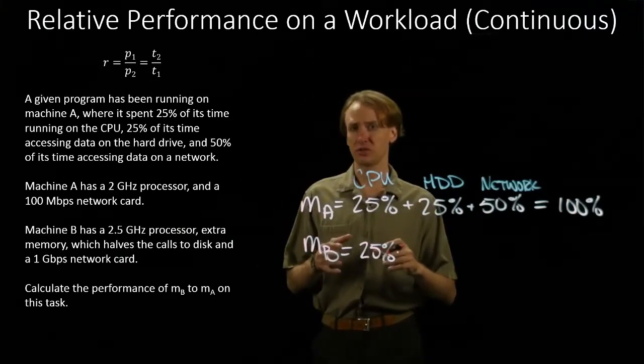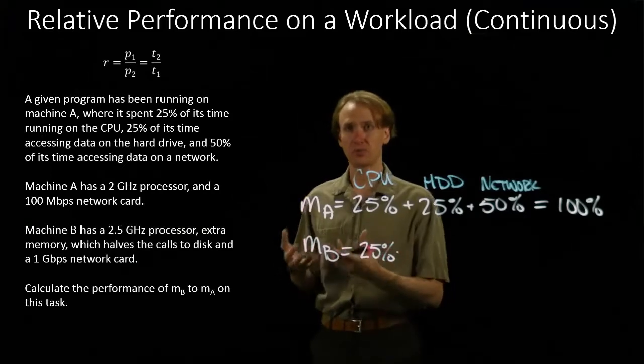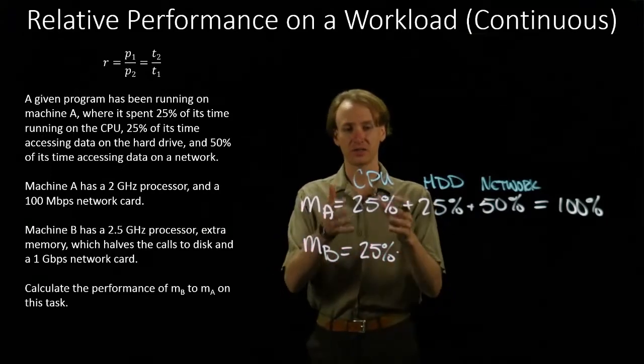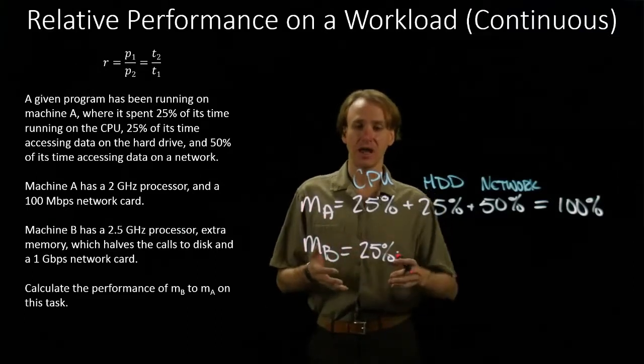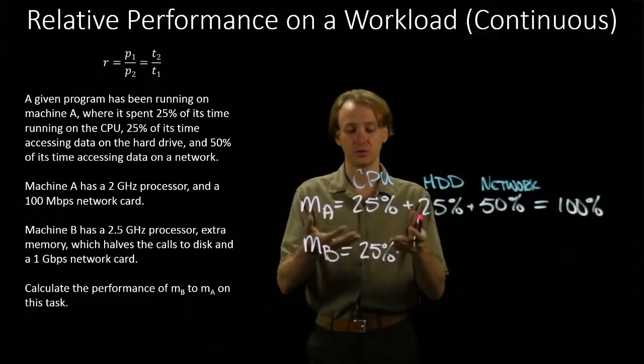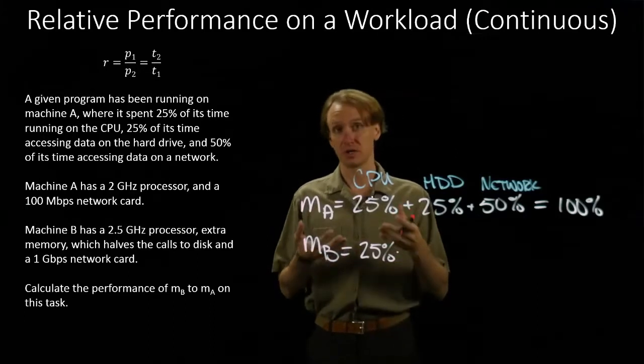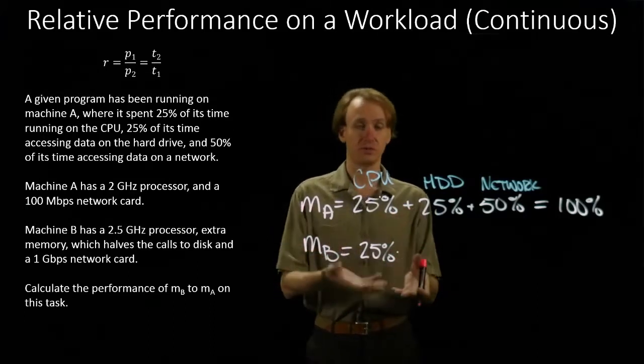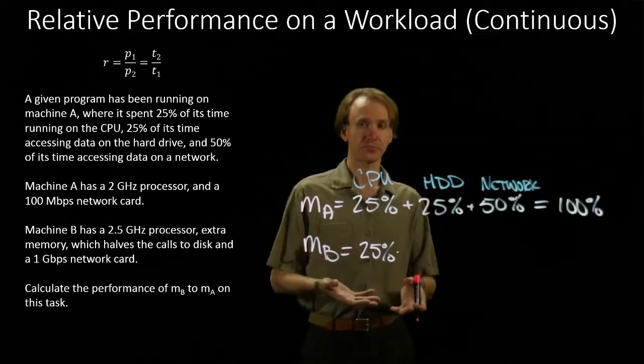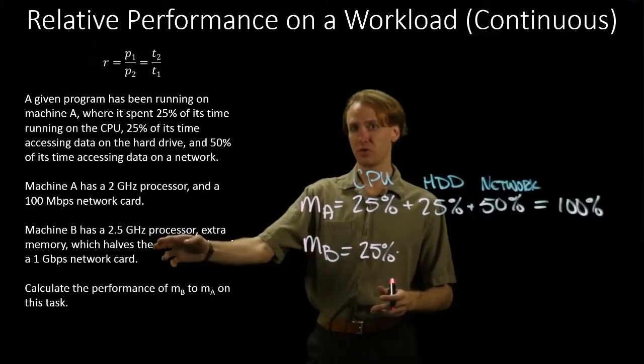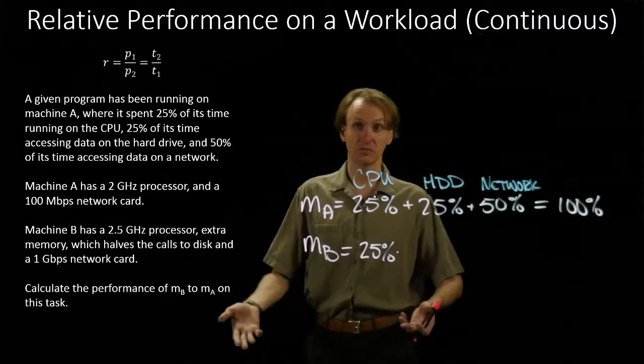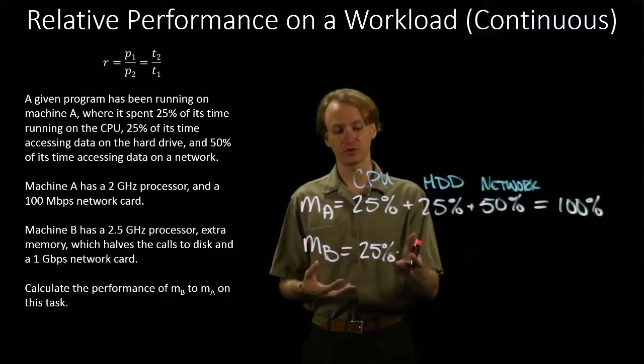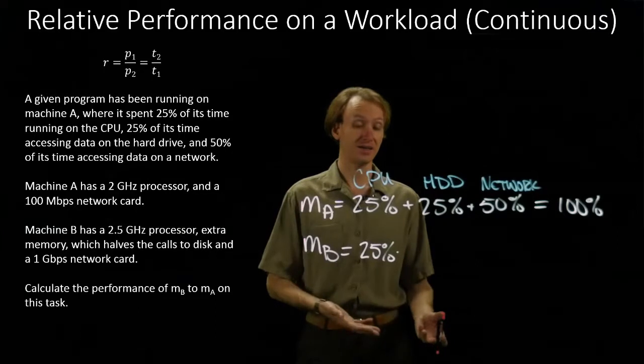Now we want to add something that tells us about how we expect the performance to differ between those two. So we're going to be interested in looking at what properties of machine A affect the CPU performance, what properties of machine B affect the CPU performance, and how those will combine to change how much time machine B is spending running CPU instructions. So I know that machine B has a 2.5 GHz processor, and machine A also has a 2 GHz processor. So machine B will run the CPU instructions slightly faster than machine A did.